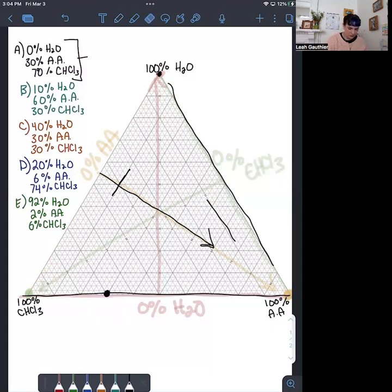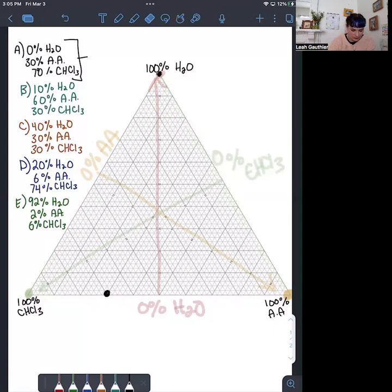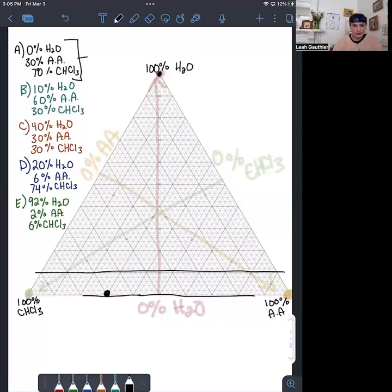I'll do a couple more just so you can plot any amount of data. The next one is 10% water, 60% acetic acid, and 30% chloroform. If we want a data point that is 10% water, we can start here along this line which is 0% water, and the next one up is 10%. So our point is going to be somewhere along that line.